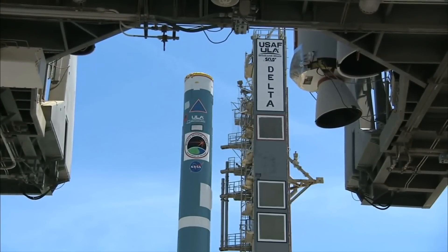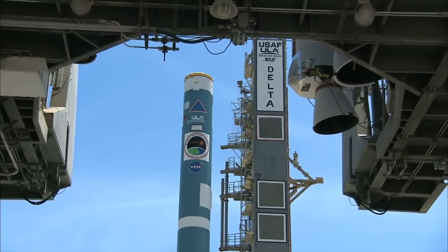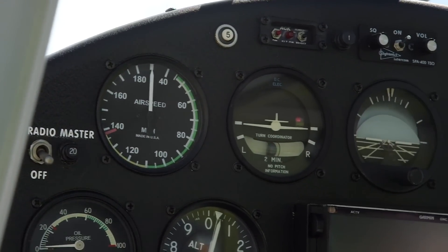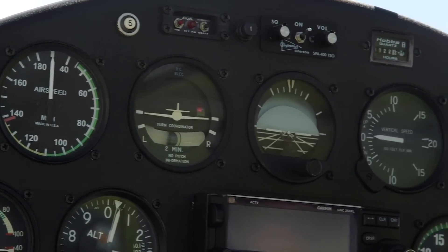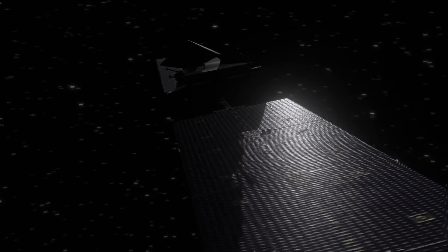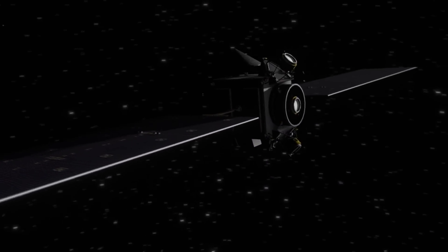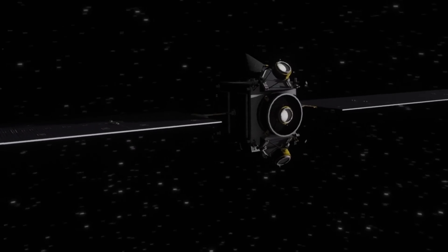Despite these challenges, both Voyager 1 and Voyager 2 have exceeded all expectations. Voyager 1 still has four working instruments, and Voyager 2 has five. These instruments continue to provide valuable data about the environment of interstellar space, helping scientists to better understand the conditions that exist beyond the influence of the sun.